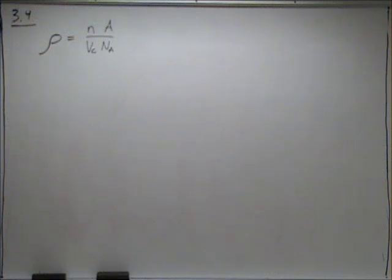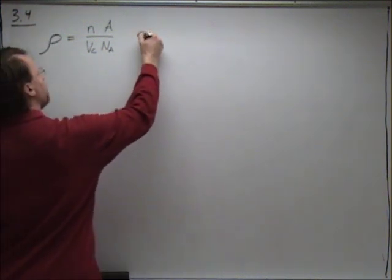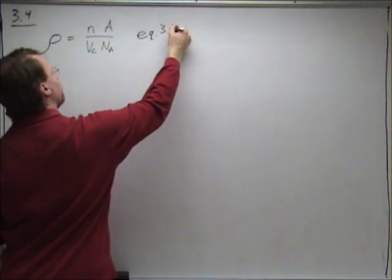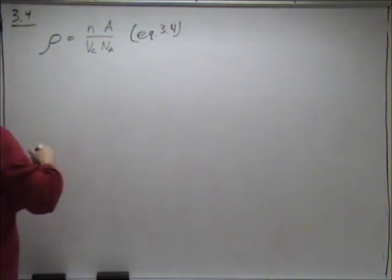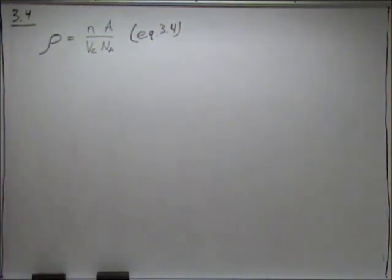Problem 3.4 asks us to calculate the radius of a palladium atom with certain givens. We'll use equation 3.4, which expresses the theoretical density of a metal, and we will look at the givens that we have.